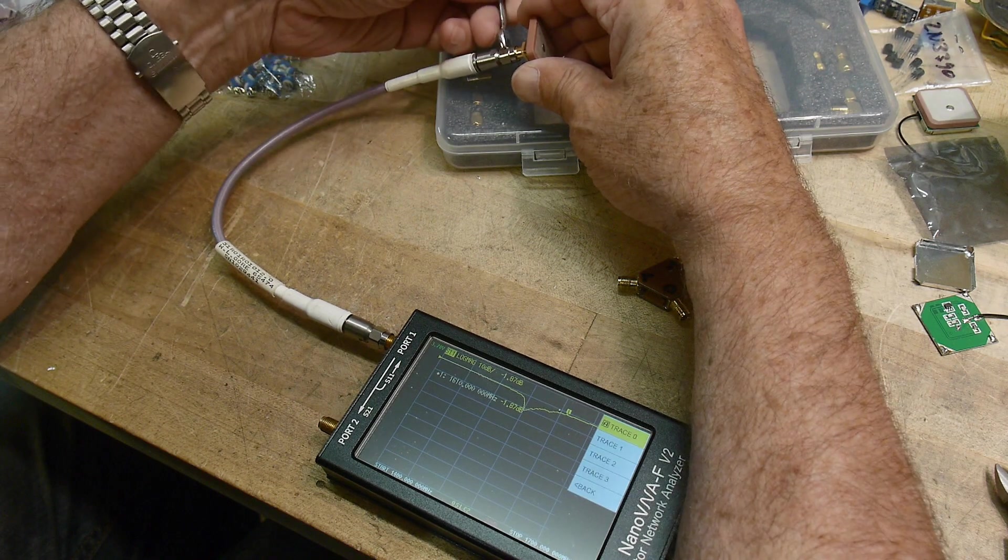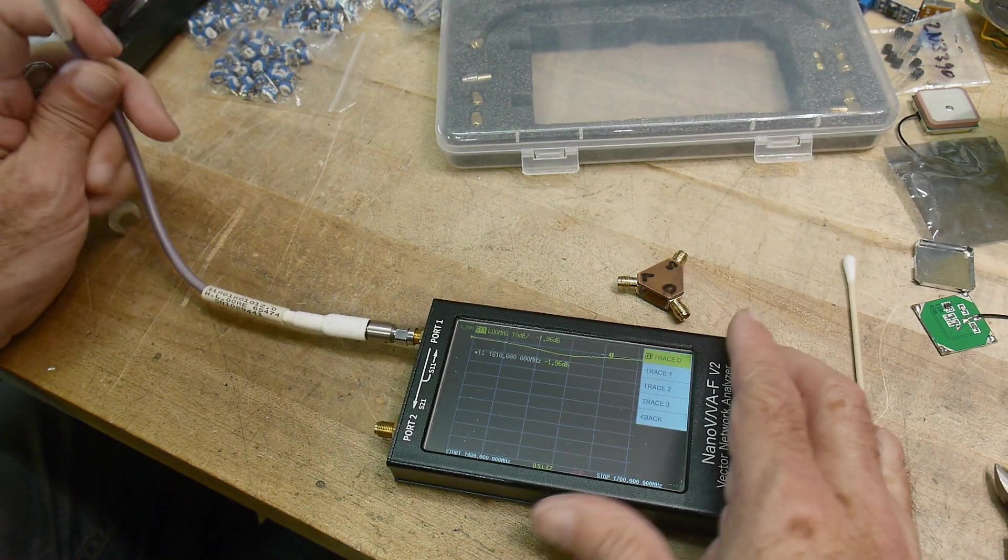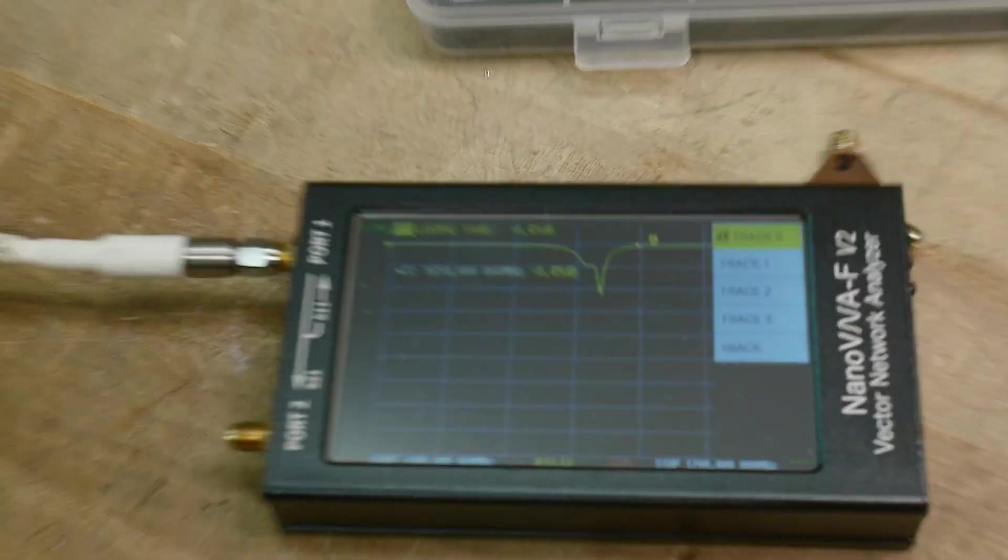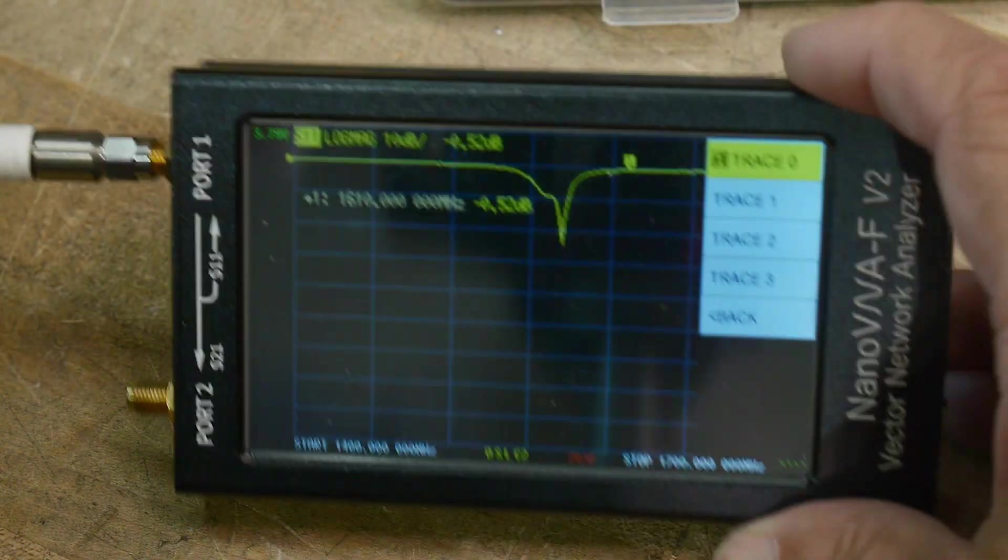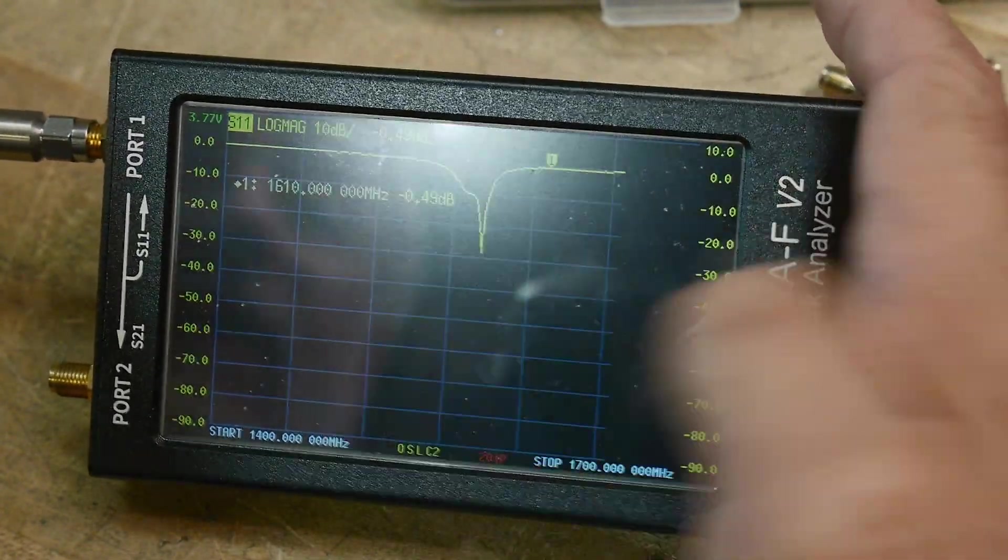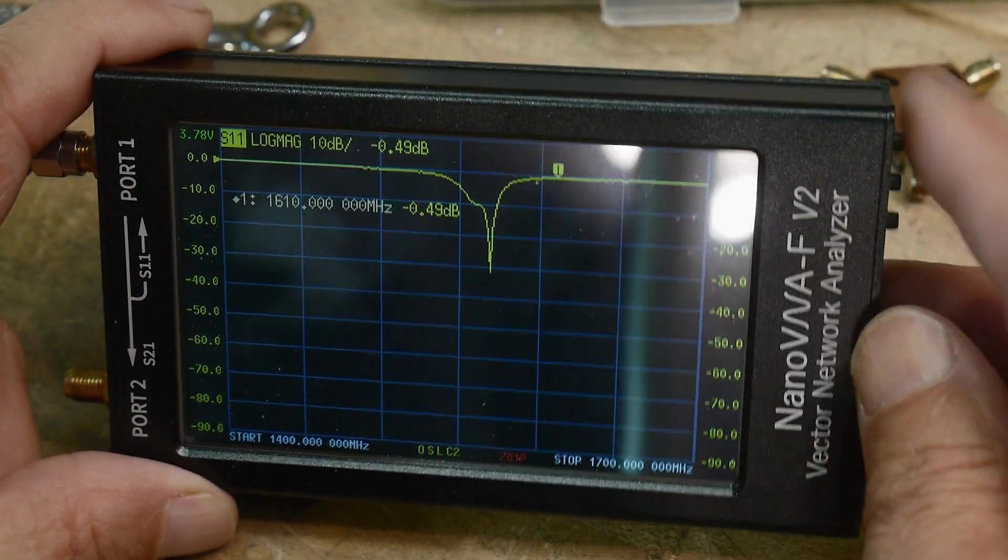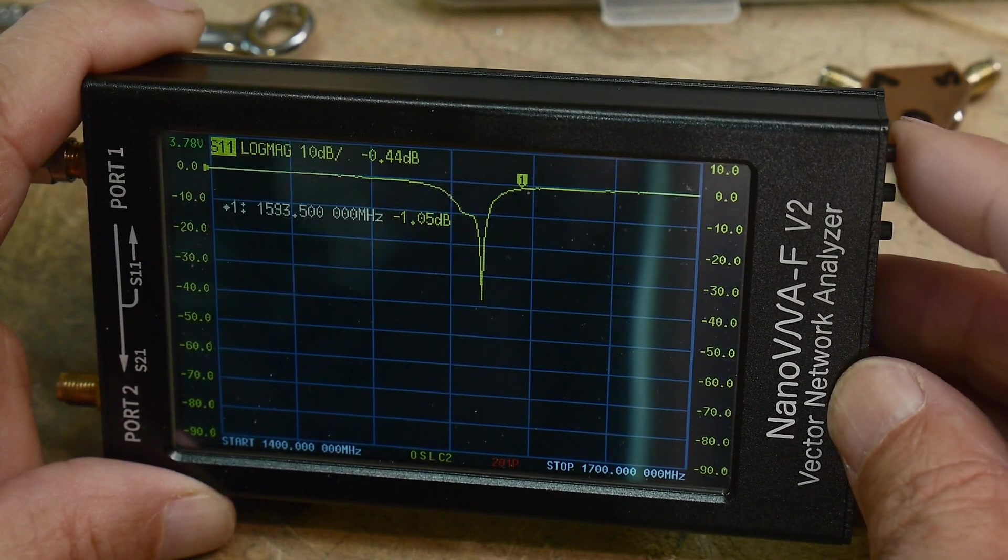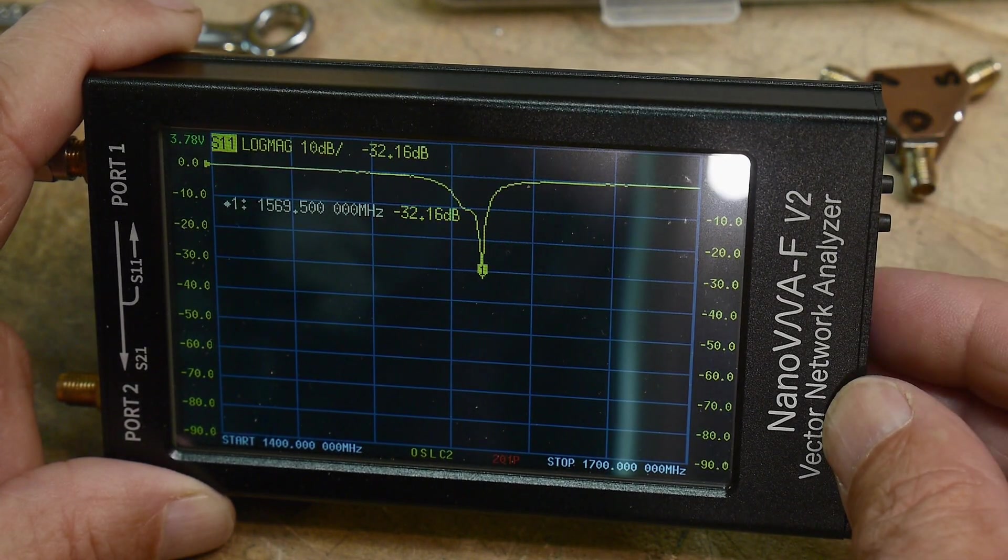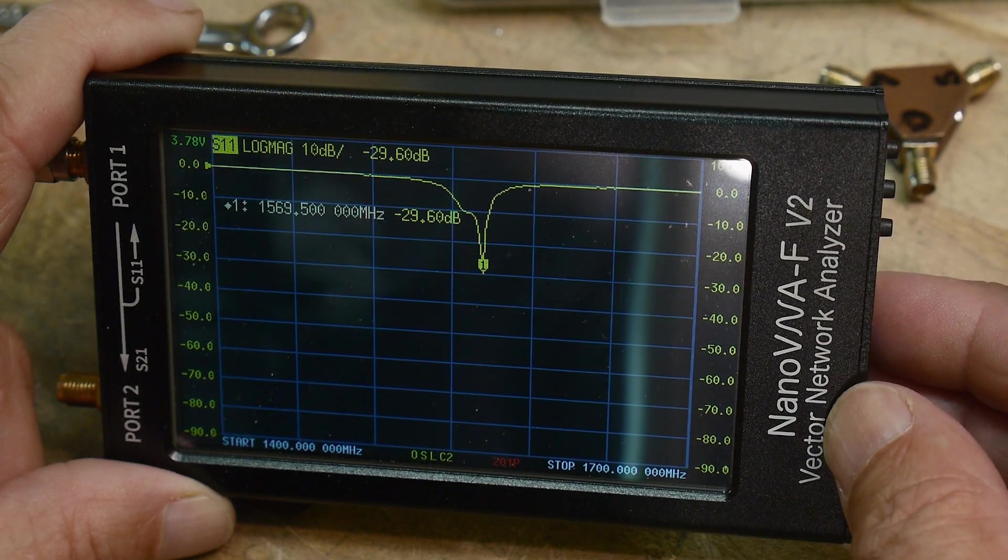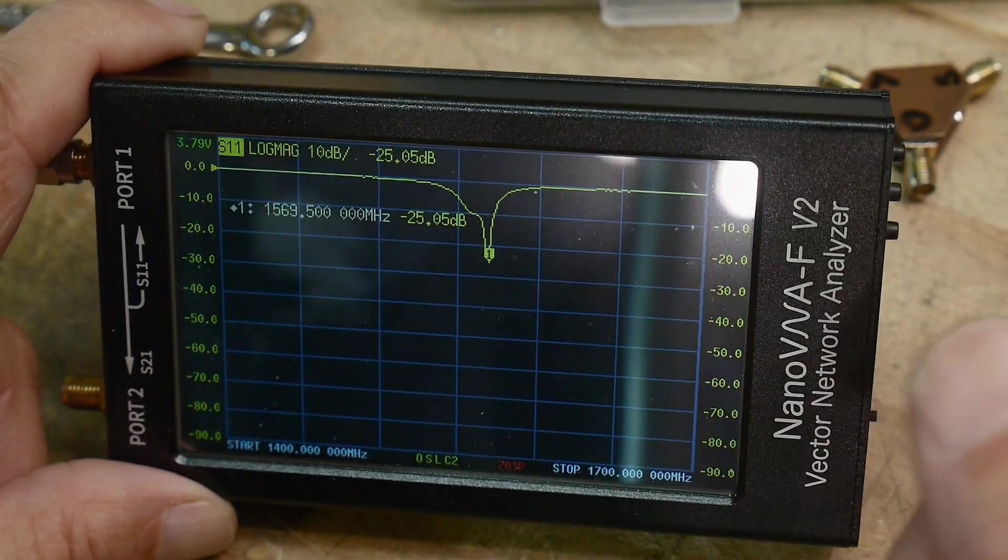It's really hard videoing these nano VNAs because they're light and they kind of want to go everywhere. I don't have a really good way to hold them. So let's zoom back down and see what's going on. I can hold it there. Let's get rid of that so you can see that we have a dip. We're getting a very nice dip. Let's see if we can't move the cursor onto that dip. There we go, 1.5695, so 1.57.